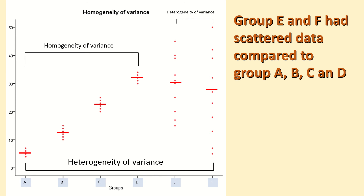Groups A, B, C, and D are labeled as homogeneity of variance, while heterogeneity of variance is exemplified in groups E and F. The red dots in each group represent the data values within that group, and the horizontal red line represents the mean for each sample. The spread of the data values from the mean represents the variance.